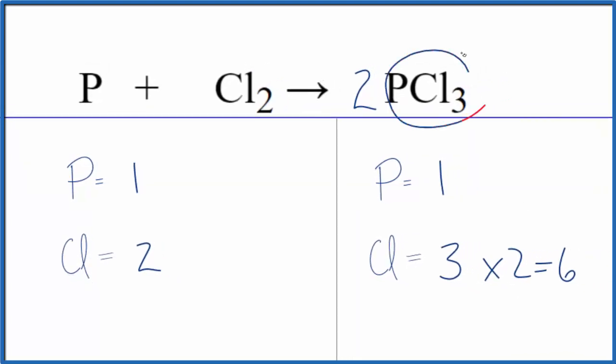This two applies to everything, so one times two gives us two phosphorus atoms. Now we put a three in front of the Cl2. Two times three gives us six, and then for the phosphorus we just need to put a coefficient of two. One times two gives us two.